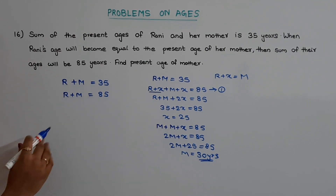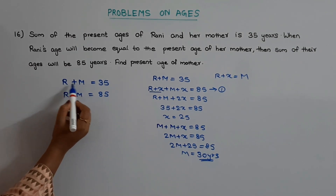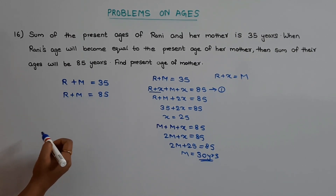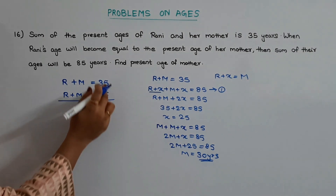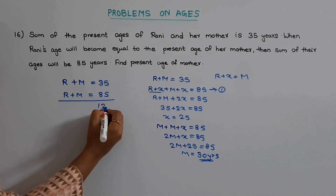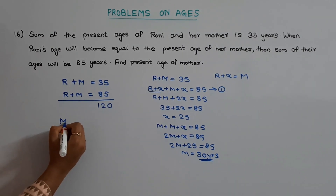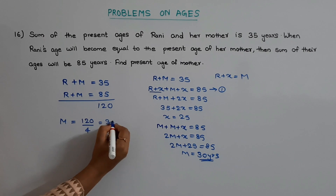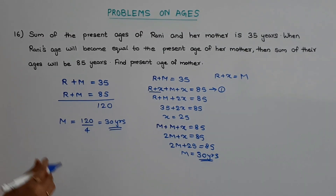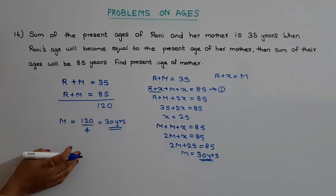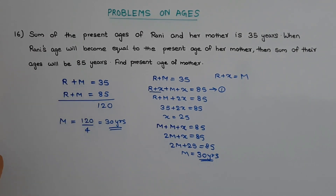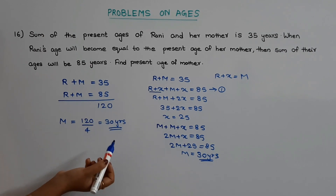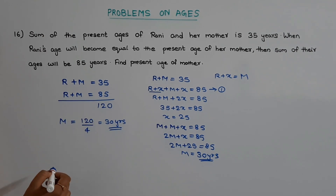Now let us see the shortcut method to find out the answer. The sum of their present ages is 35, and the sum of their ages when Rani's age equals the mother's age is 85. First, take the sum of these two sums: 35 plus 85 equals 120. Then mother's present age equals 120 divided by 4, that is 30 years. Whenever you get a problem like this, take the sum of both sums, divide by 4, and that gives the mother's present age.